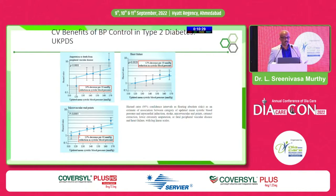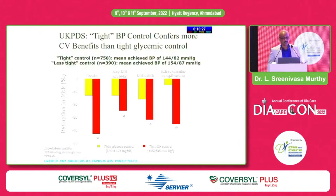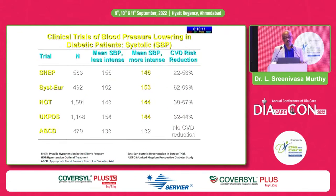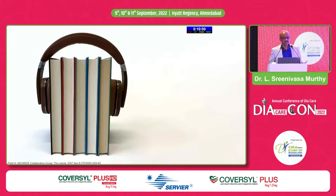Benefits from tight control of hypertension were clearly demonstrated with 758 versus 390 patients in tight versus less tight control arms. Stroke, any diabetic endpoints, diabetic death, and microvascular complications were all significantly reduced in the tight control arm. Multiple RCTs in diabetic patients, including UKPDS and the HOT trial, have clearly shown significant CVD risk reduction with systolic BP reduction.